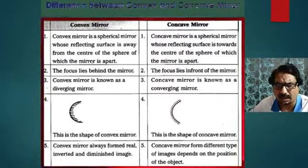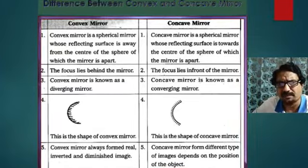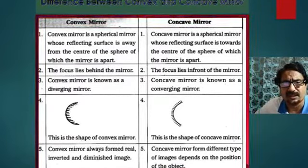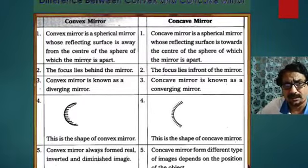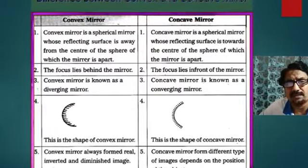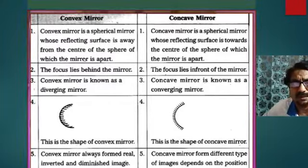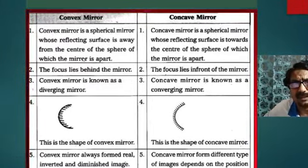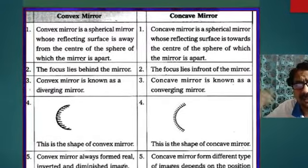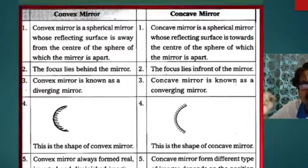Here are the major differences. If you compare convex mirror and concave mirror, there are five. First, convex mirror is a spherical mirror whose reflecting surface is away from the center of the sphere, and concave mirror is a spherical mirror whose reflecting surface is towards the center of the sphere. Second, the focus lies behind the mirror in convex, whereas in concave mirror the focus lies in front of the mirror.